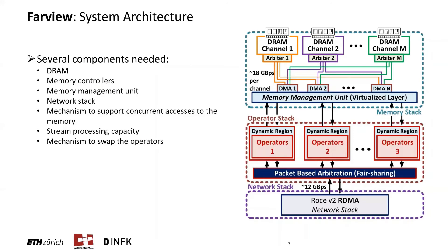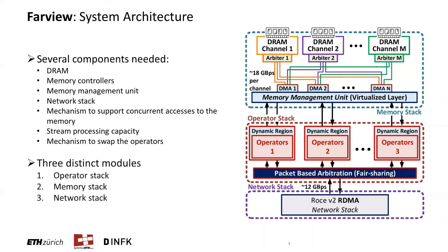Prototyping a smart disaggregated memory requires several components, and modern FPGAs are a natural match for such functionality, as high performance and flexibility can both be combined in a single device. They also support high-performance networking and can have substantial amounts of local memory attached with heaps of bandwidth. For these reasons, Farview is implemented on a modern FPGA data center card, and the architecture is organized around three distinct modules: the operator, the memory, and the network stacks. These stacks are connected via high-performance buses, so there are no additional bottlenecks introduced along the way.